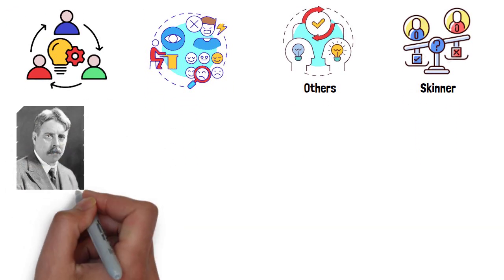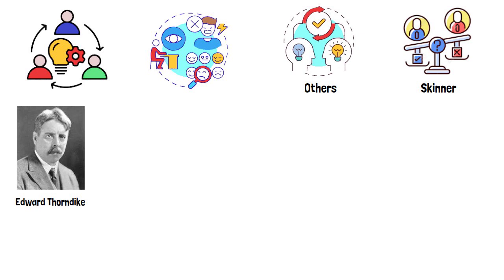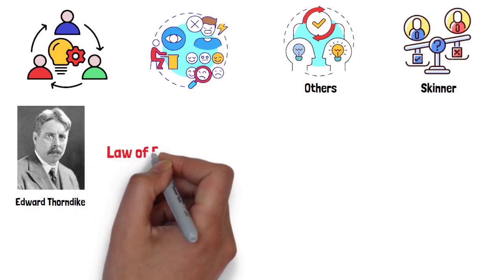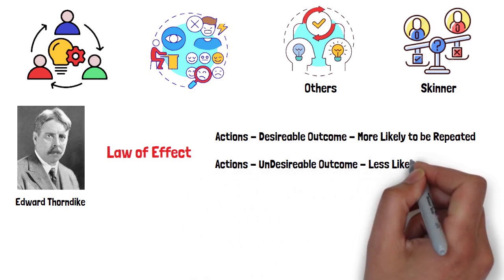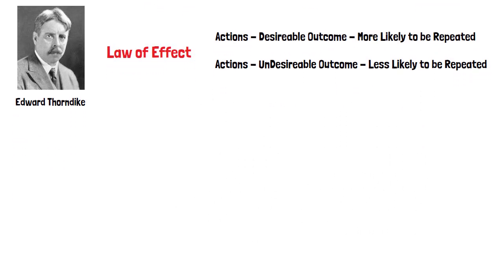His theory was heavily influenced by the work of psychologist Edward Thorndike, who had proposed what he called the law of effect. According to this principle, actions that are followed by desirable outcomes are more likely to be repeated, while those followed by undesirable outcomes are less likely to be repeated.